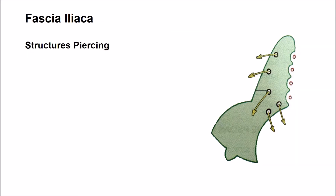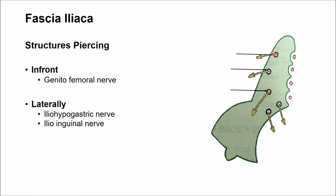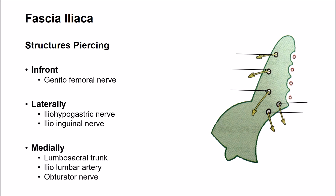Structures piercing the iliopsoas fascia are: anteriorly, the genitofemoral nerve; laterally, the iliohypogastric and ilioinguinal nerves; and medially, the lumbosacral trunk, iliolumbar artery, and obturator nerve pierce the fascia iliaca.